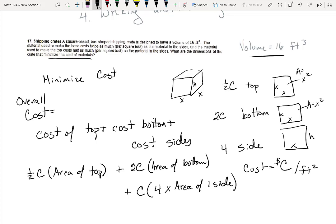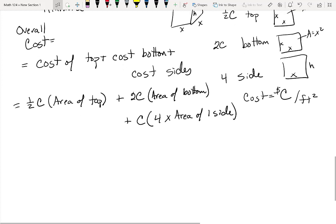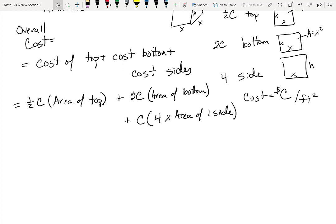And the cost of each side should be just the cost times 4 times the area of 1 side, right? So I'm just thinking through this, these are called word equations, of these 4 representations in calculus that we use a lot in this modeling. It helps to transition step by step from ideas to words to mathematics. So here I have 1 half C times x squared, 2 times the cost, x squared, and then 4C times x times h. So this is the overall cost.